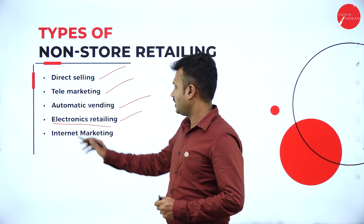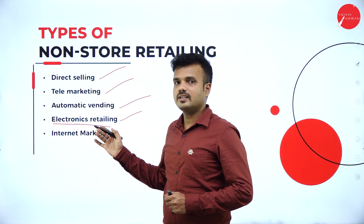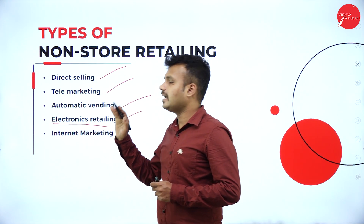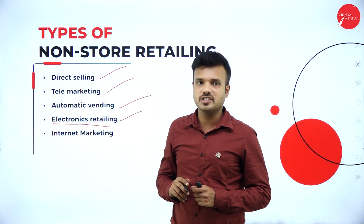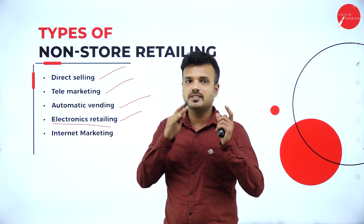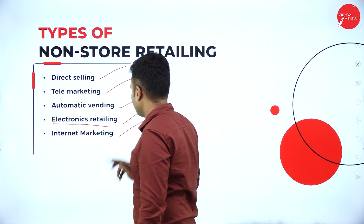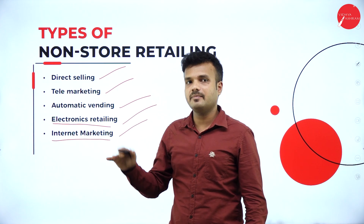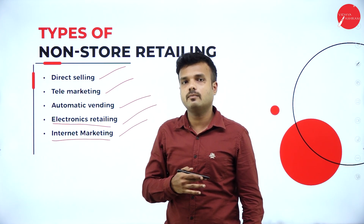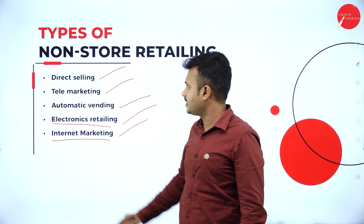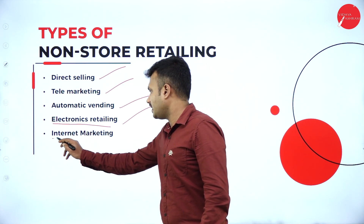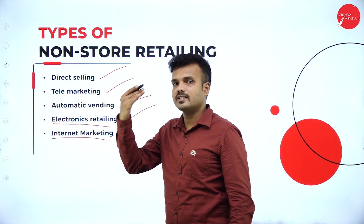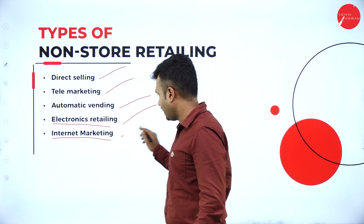Electronics retailing, or e-retailing, means all goods and services are sold through the internet. E-retailing consists of two media of communication: B2B (business to business) and B2C (business to customer). Internet marketing is a marketing activity done using the internet and social media — it may be WhatsApp, Twitter, Facebook, Instagram, or any advertising or marketing activity using the internet. Internet marketing is the use of the online mode to promote the company and its products.